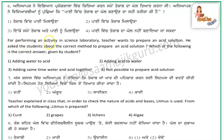Question number 6: for performing an activity in a science laboratory, a teacher wants to prepare an acid solution. Students have been asked about the correct method. Adding water to acid will produce a lot of heat from the glass. The correct method is to add acid to water.